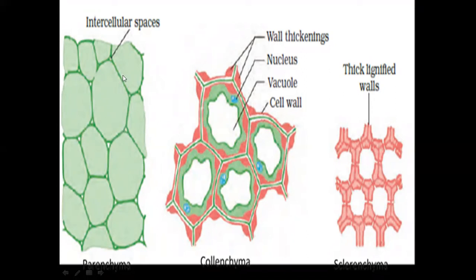Parenchyma cells can be oval, round, or polygonal. The cell wall is made up of cellulose, and intercellular spaces are also present. Each cell has a central vacuole, cytoplasm, and a prominent nucleus, which is typical of plant cells. Parenchyma is found universally throughout the plant — it is the most abundant tissue, forming major tissue of softer parts such as epidermis, leaf mesophyll, cortex, and pith.